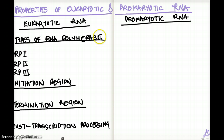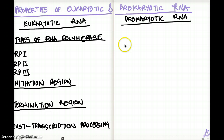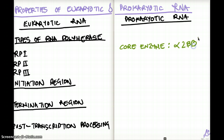The first topic is types of RNA polymerase. RNA polymerase makes RNA, and there are different types. For prokaryotic RNA polymerase, there is really just the core enzyme: alpha-2, beta, and beta-prime. That's the RNA polymerase of prokaryotes.